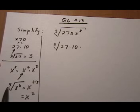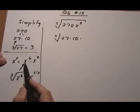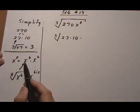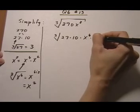If I had a square root instead, it would be 6 divided by 2. So whatever the root is, you divide the exponent by that. So I'm going to rewrite x to the eighth as x to the sixth because that's the highest cube root I can make with the leftover of x squared.